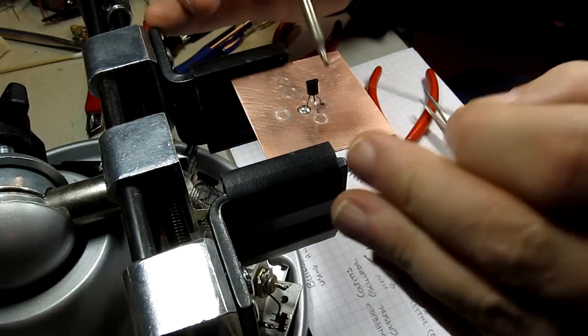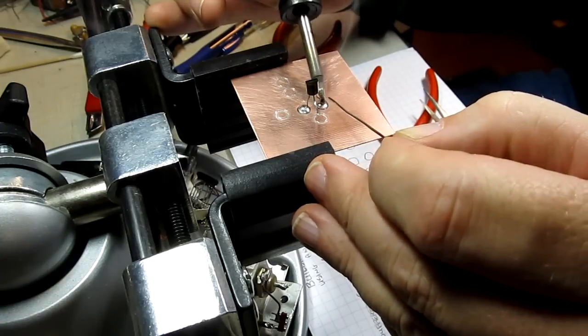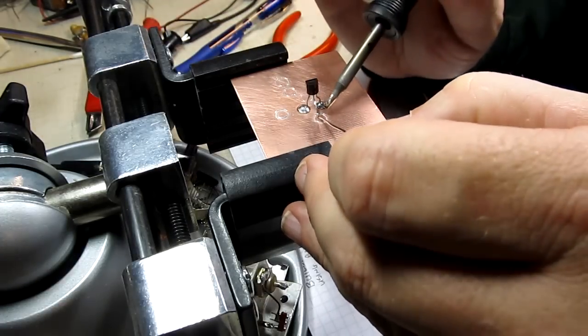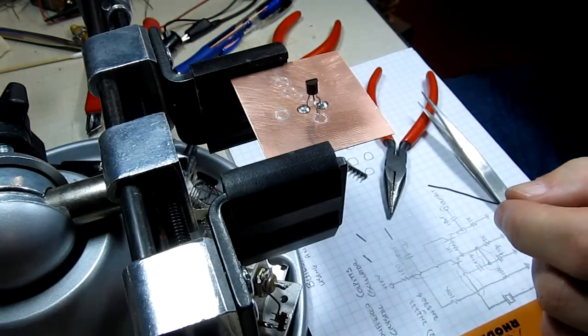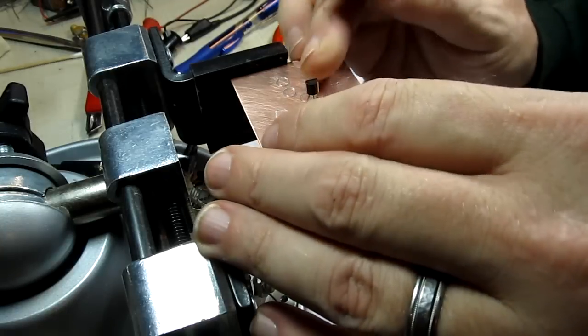And we'll just solder in the other two leads here. So the emitter. And we'll do the base. I've got to bend that over just a little bit so it doesn't short. Grab my tweezers here. Actually, I think I just do this by hand.